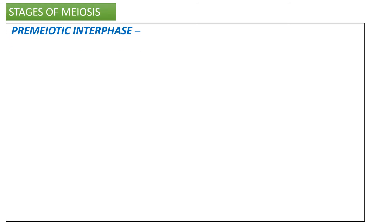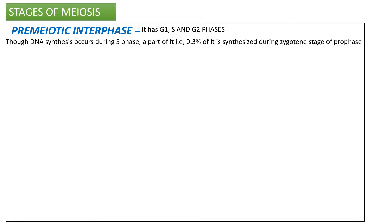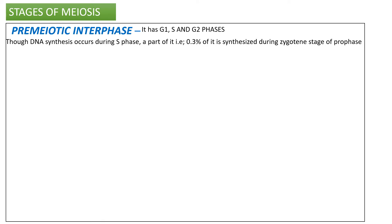Meiosis starts with pre-meiotic interphase, occurring before prophase I. It has G1, S, and G2 phases — details of these phases were explained in the last video. In the S phase of pre-meiotic interphase, DNA synthesis occurs, but a part of it — around 0.3% — is synthesized during the zygotene stage of prophase I.